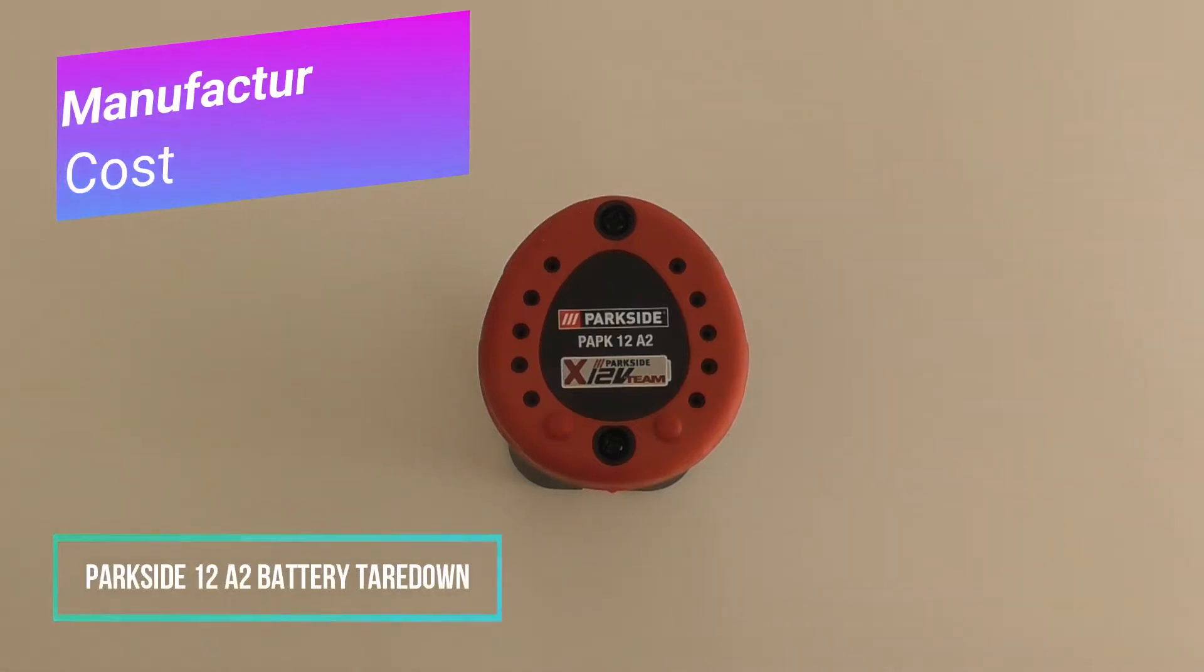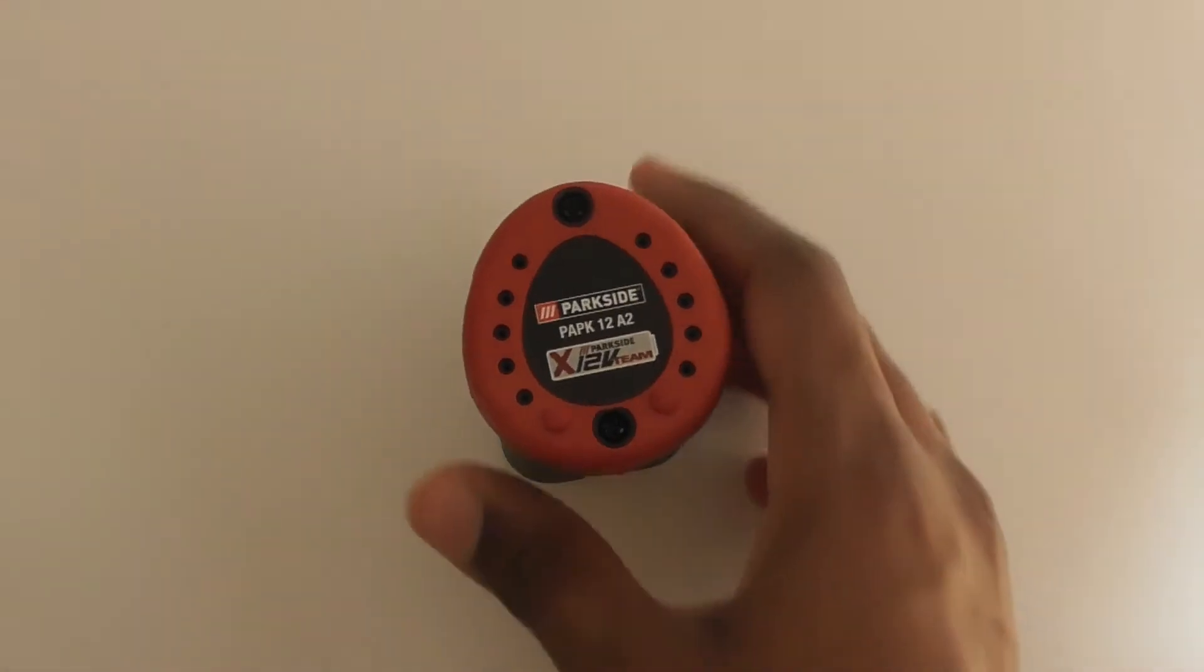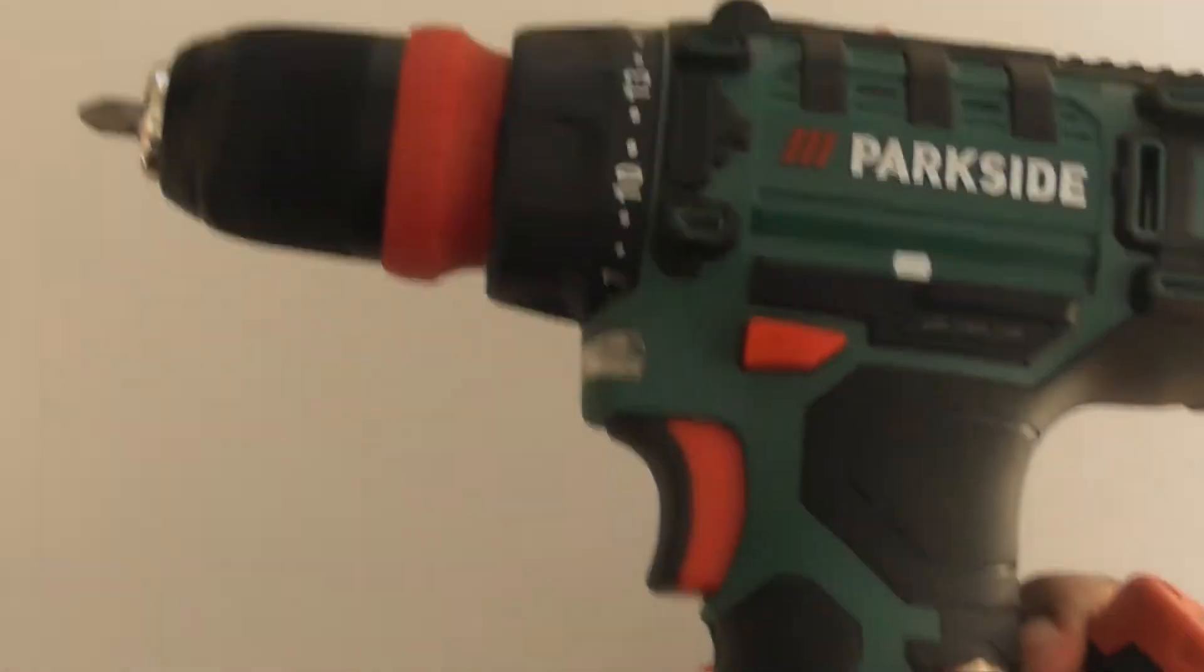In this video I'm going to be tearing down this Parkside drill battery. You can buy it from Lidl for around £10 including a charger, and it fits in the Parkside drills as well.